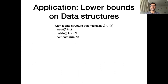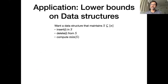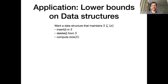The sunflower lemma has been used to prove lower bounds — that it's impossible to find a more efficient solution than one we already know. The first example I'll show has to do with the study of data structures. A data structure is a way to maintain data efficiently. Specifically, I'll consider a data structure for maintaining a set.